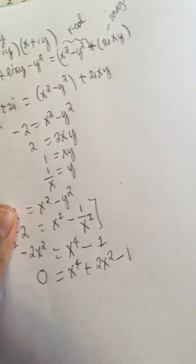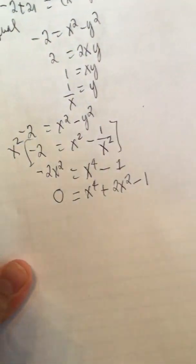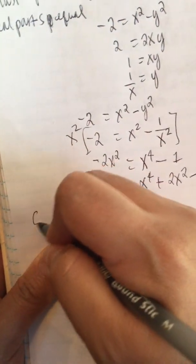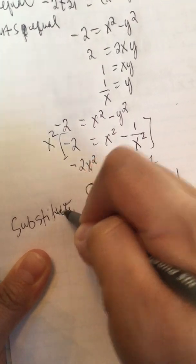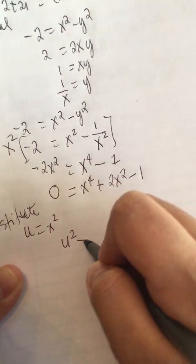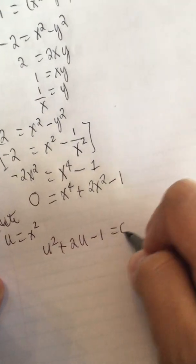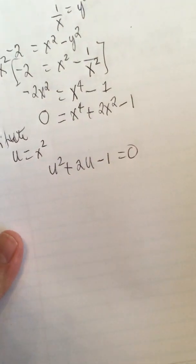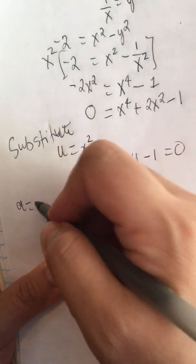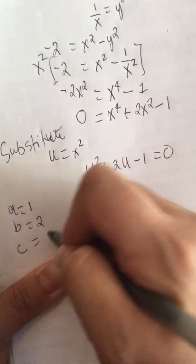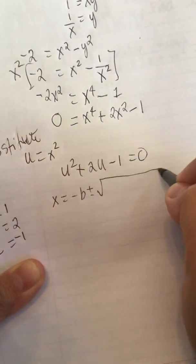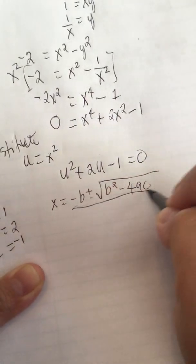We substitute u = x², so the equation becomes u² + 2u - 1 = 0. We can now use the quadratic formula to solve for u, with a = 1, b = 2, and c = -1. The quadratic formula gives u = (-b ± √(b² - 4ac)) / 2a.